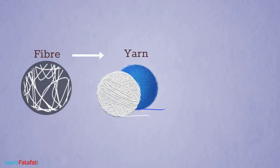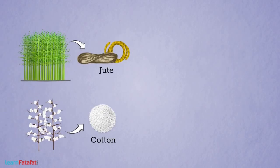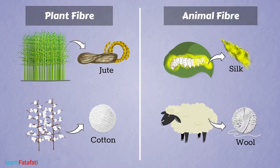Fibers are used to make yarn, which in turn is used to make fabric. Fibers obtained from plants are plant fibers, while those obtained from animals are animal fibers — for example, wool and silk. In this next section, we will talk about wool.